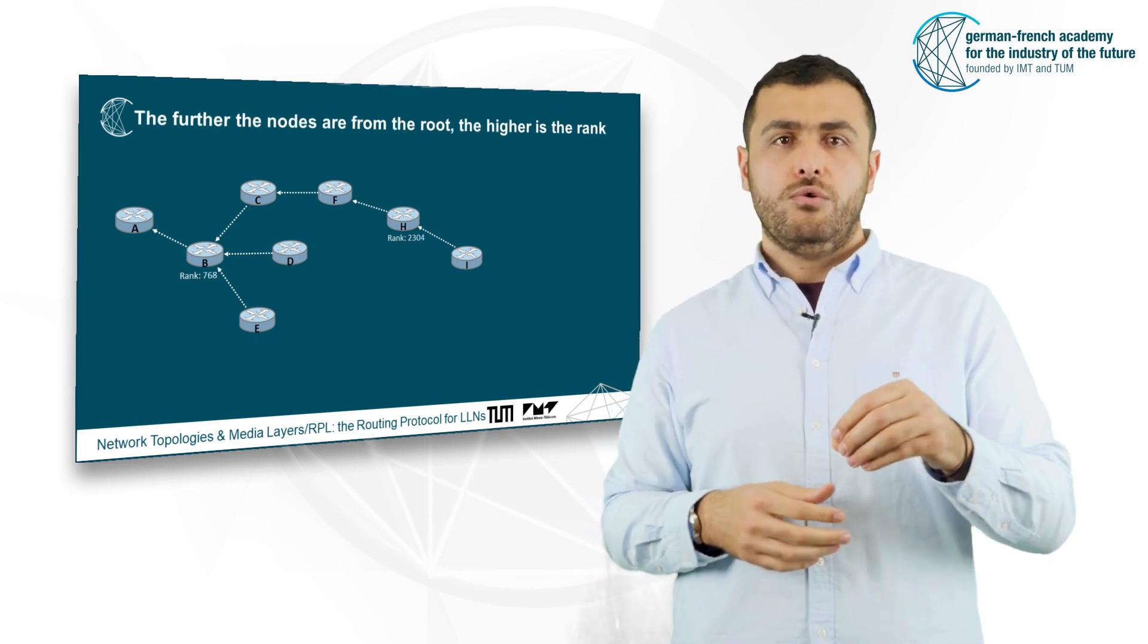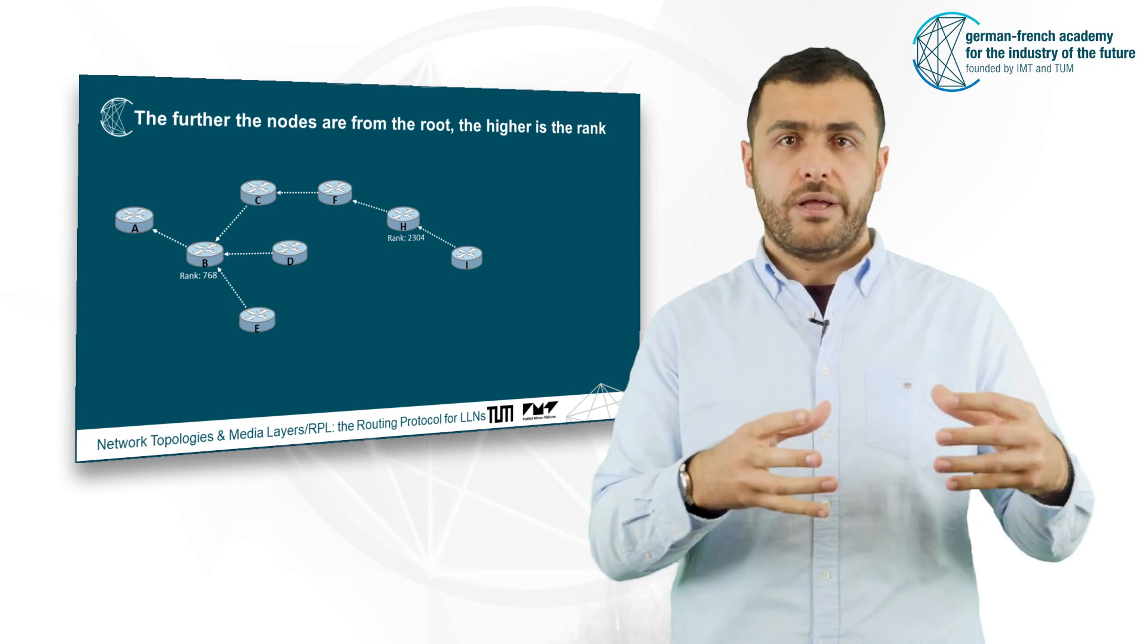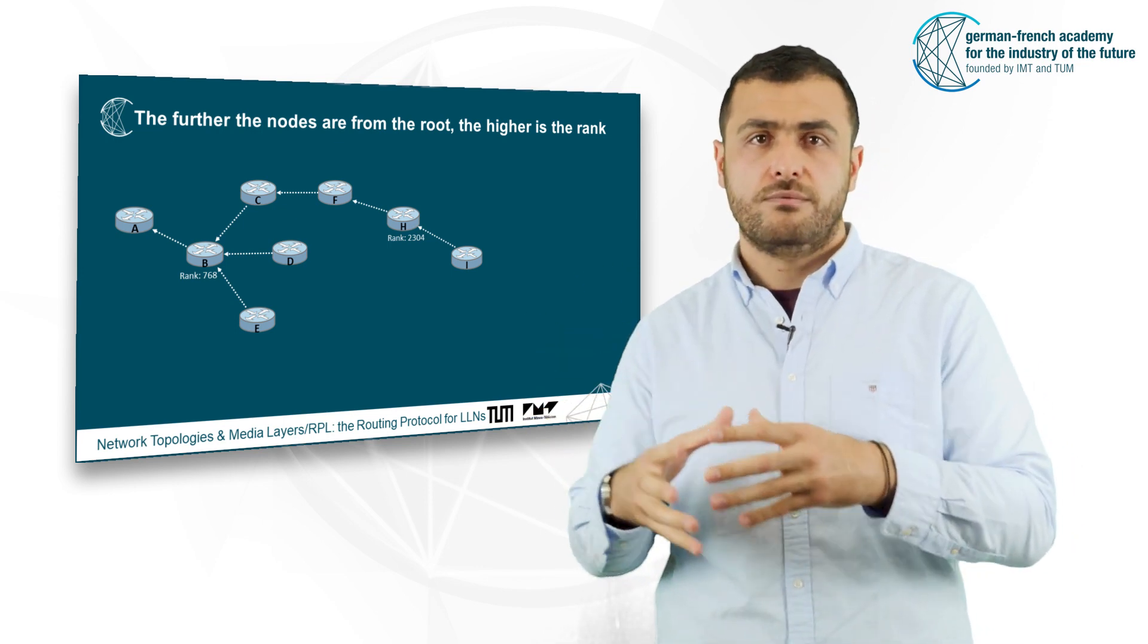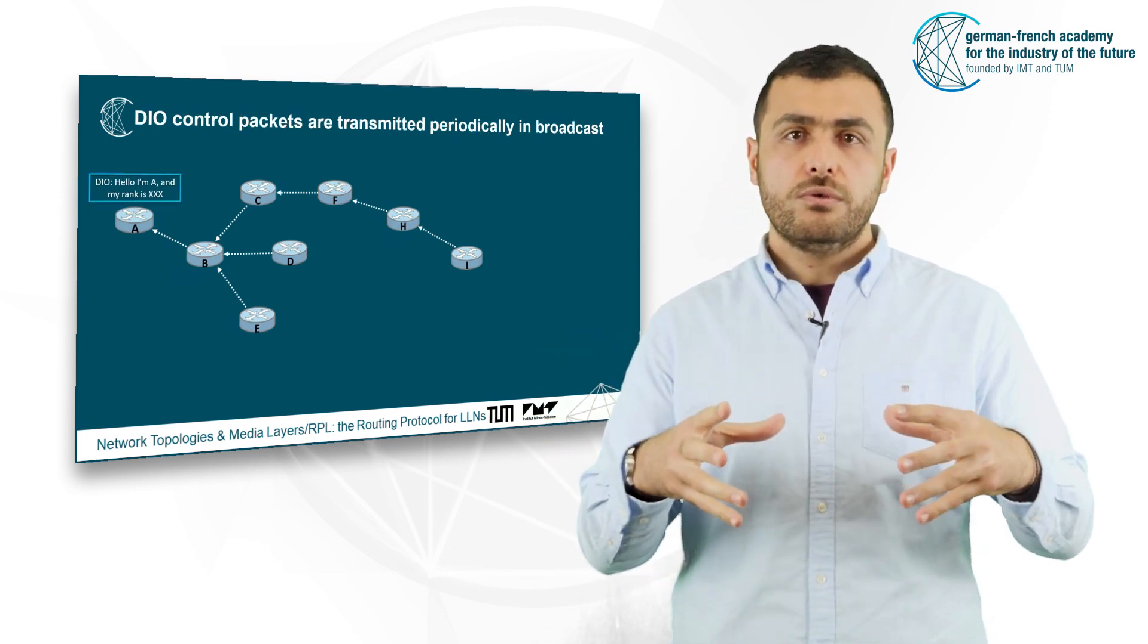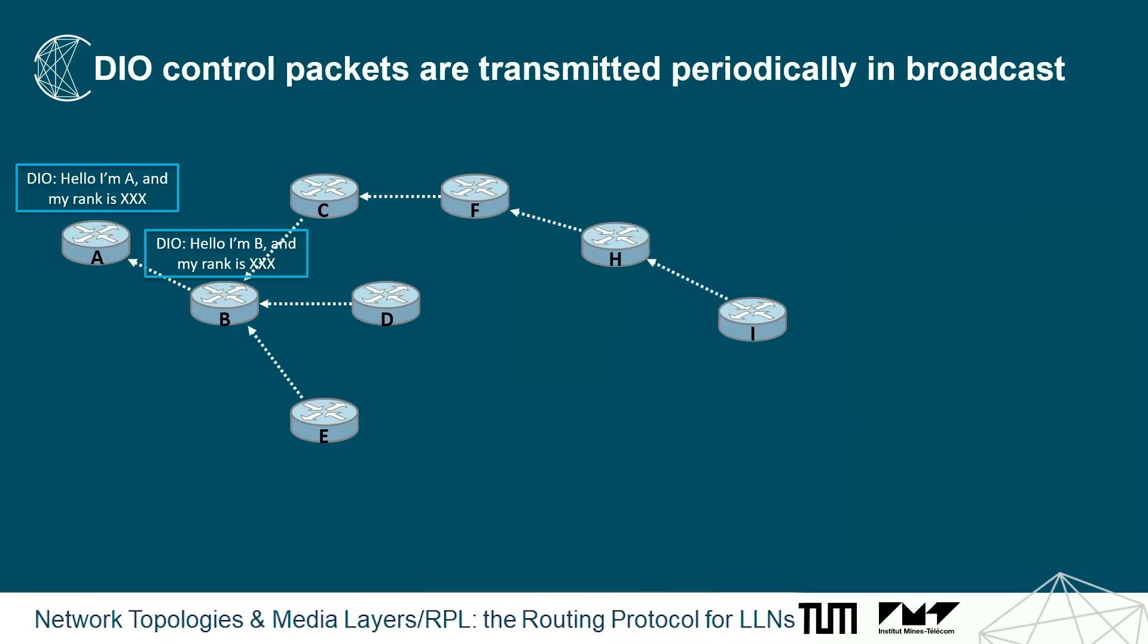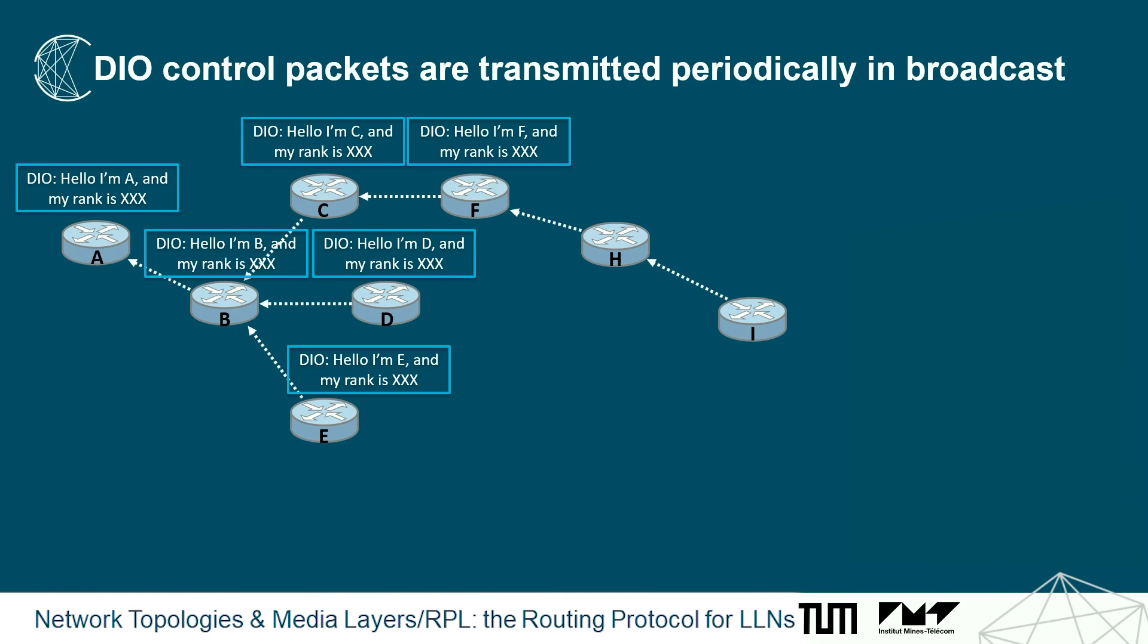For example, node B has a smaller rank than the node H. A node will compute its rank based on its neighbor's rank and in particular the one of its preferred parent.